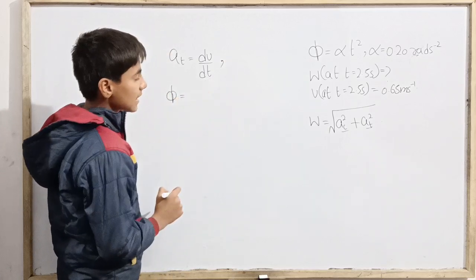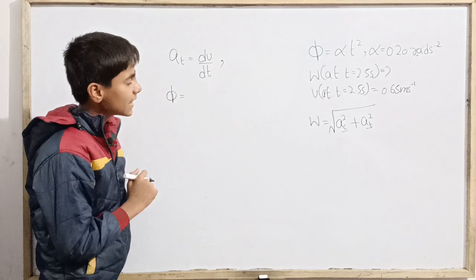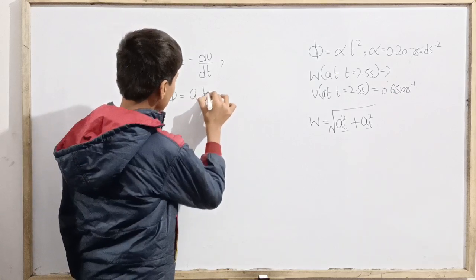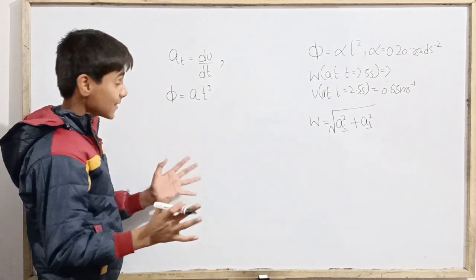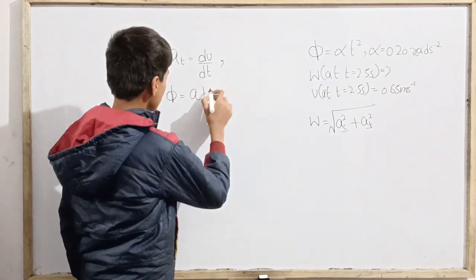How does the speed, linear speed work? So phi is given as alpha t squared. I'd rather like to take it by a, we can write this from a, otherwise we can be confused while dealing with alpha, right, that is angular acceleration. So we can consider it.